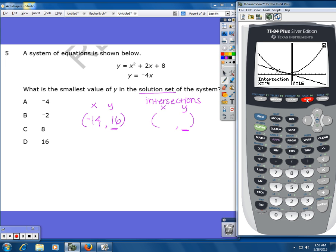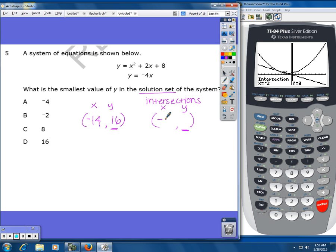So second, trace, number five, and then I'm going to scroll back to the right. That's somewhere near where the other intersection is going to be. So I'm going to press enter three times. And my other intersection is negative 2, 8.